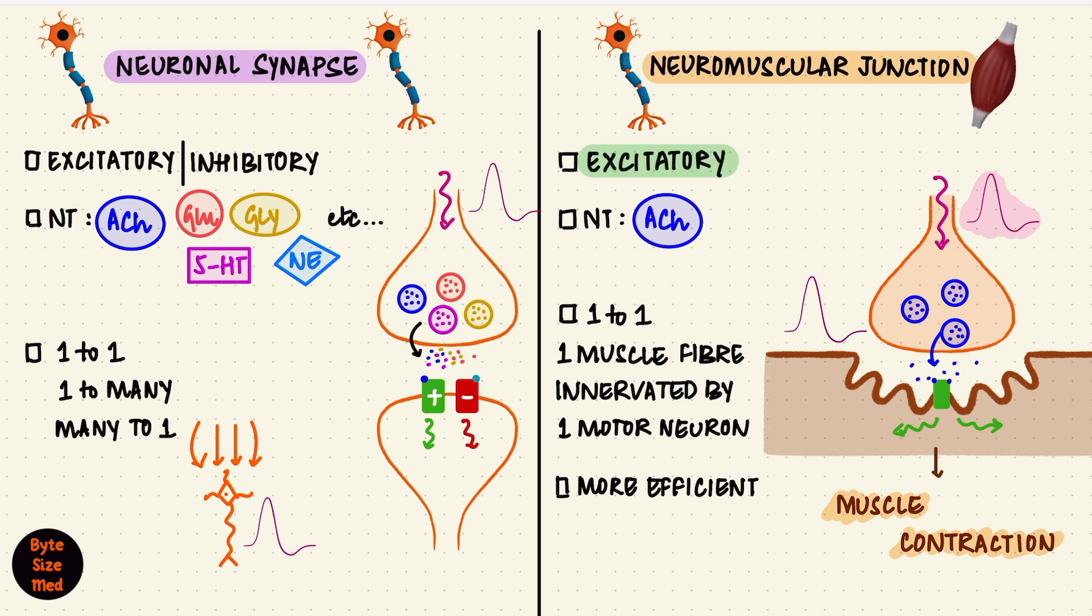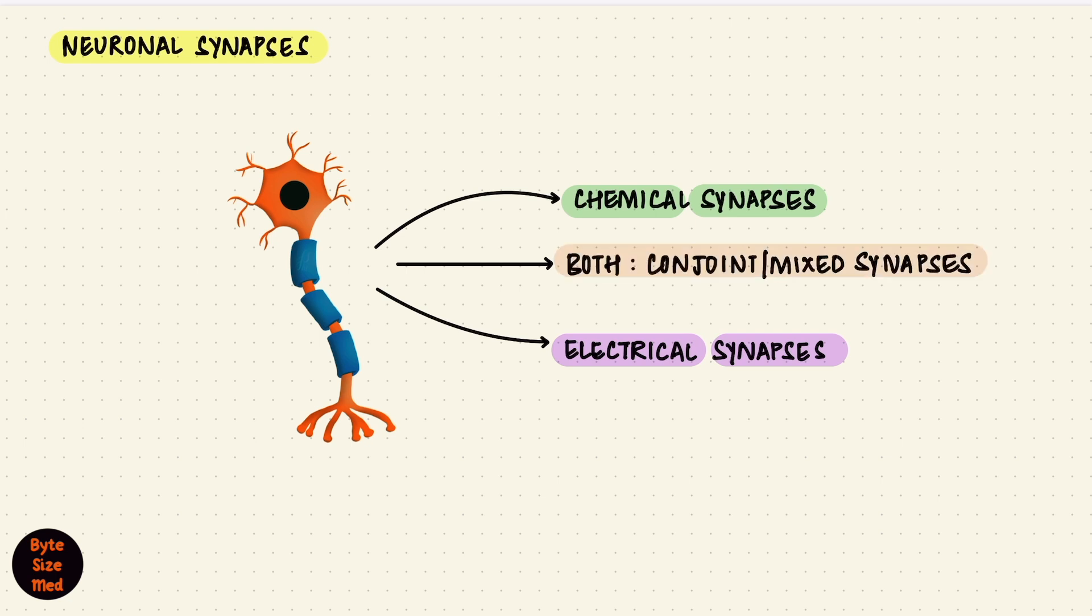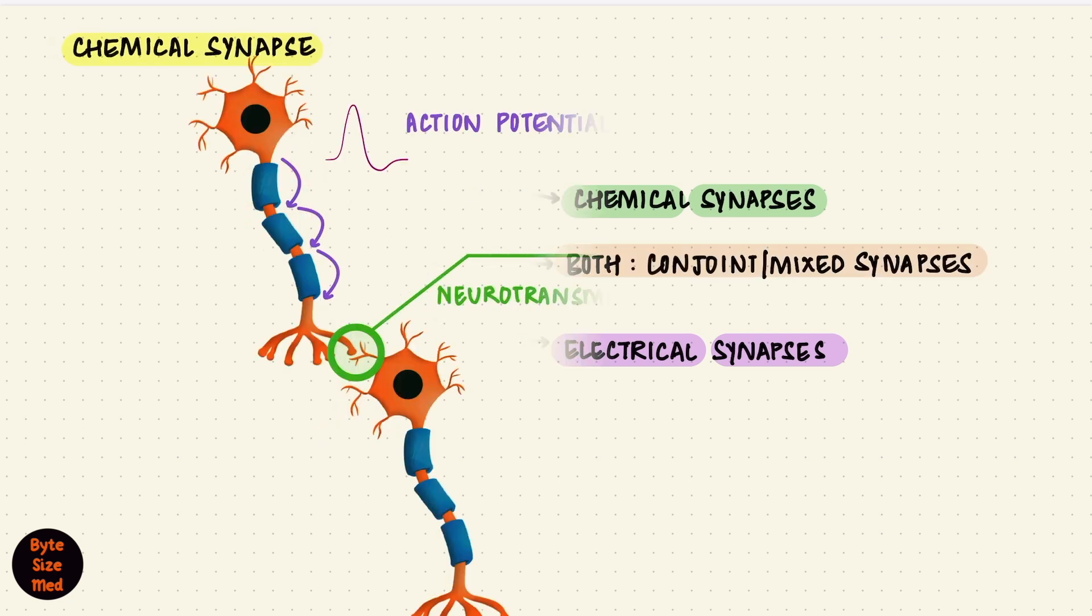So even though they're similar, there are a lot of differences between these two kinds of synapses. What is common between them is that they are both chemical synapses. As we have electrical synapses and chemical synapses, some neurons can actually have both when they're called conjoint or mixed synapses. Those are all the different kinds of synapses.